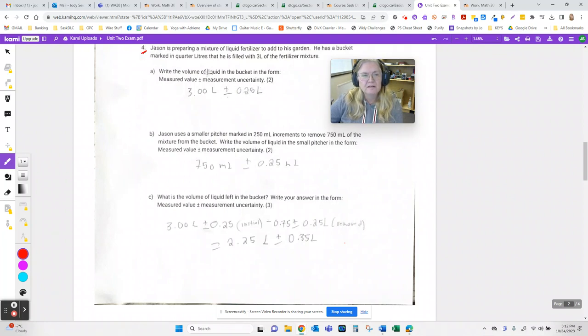In this question, Jason's preparing a mixture of liquid fertilizer for his garden and he has a bucket or a pail that's marked in quarter liters. He's filled it with three liters.